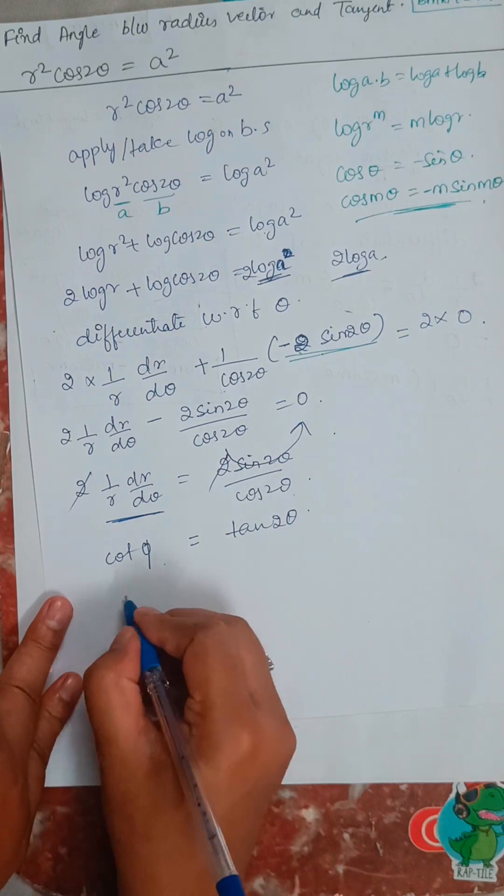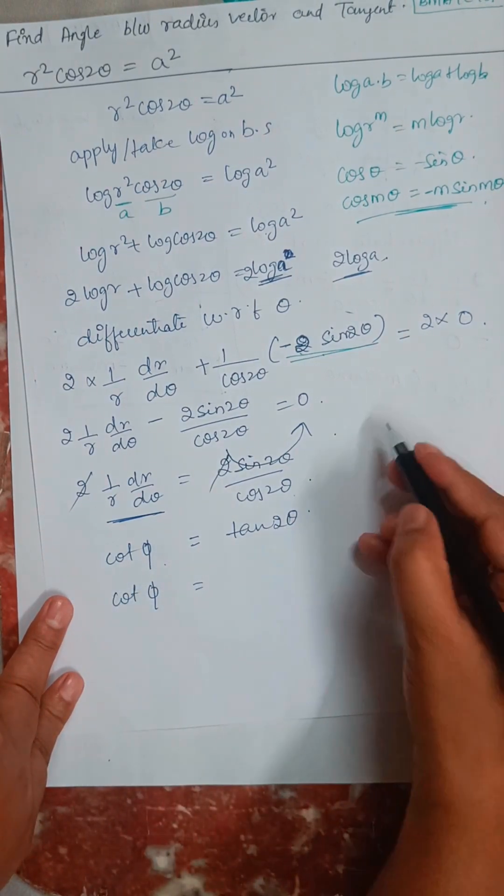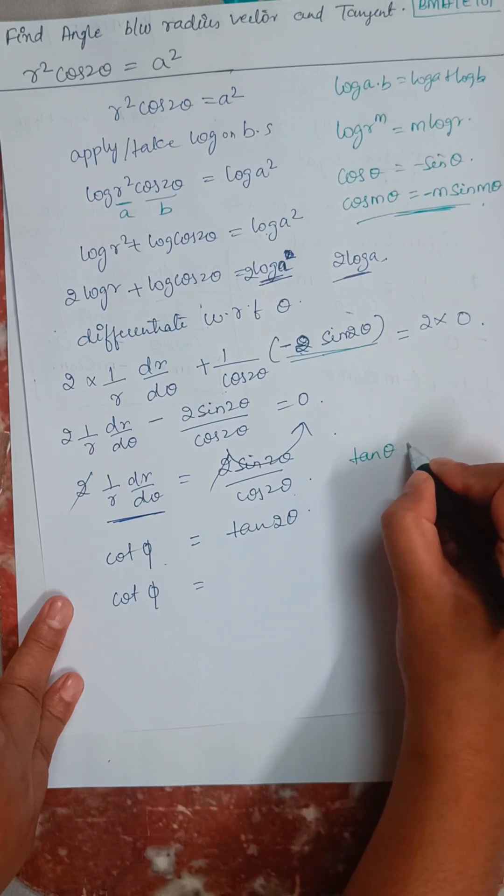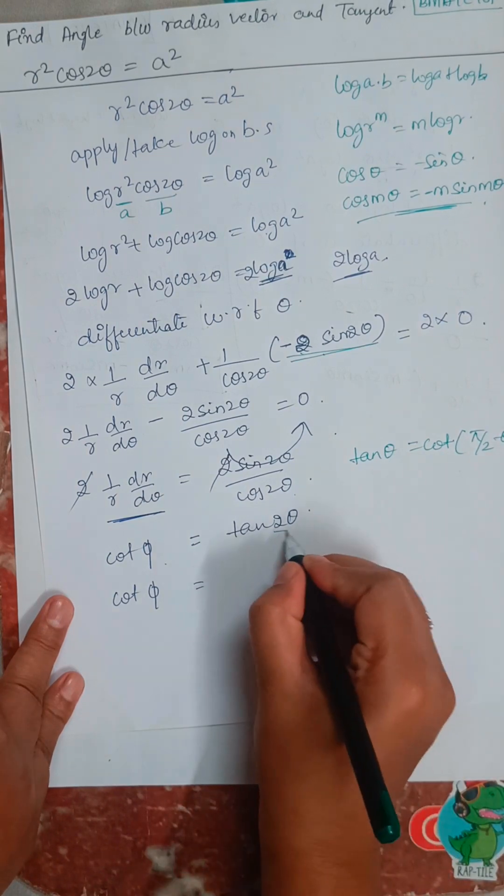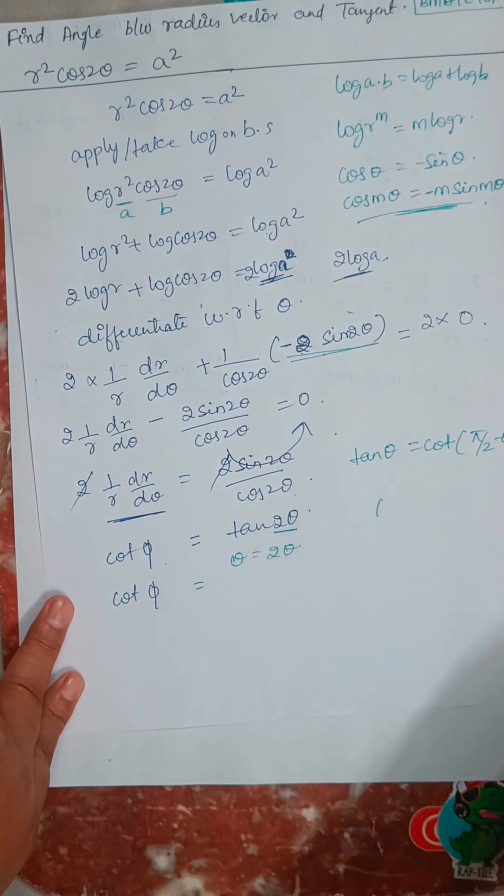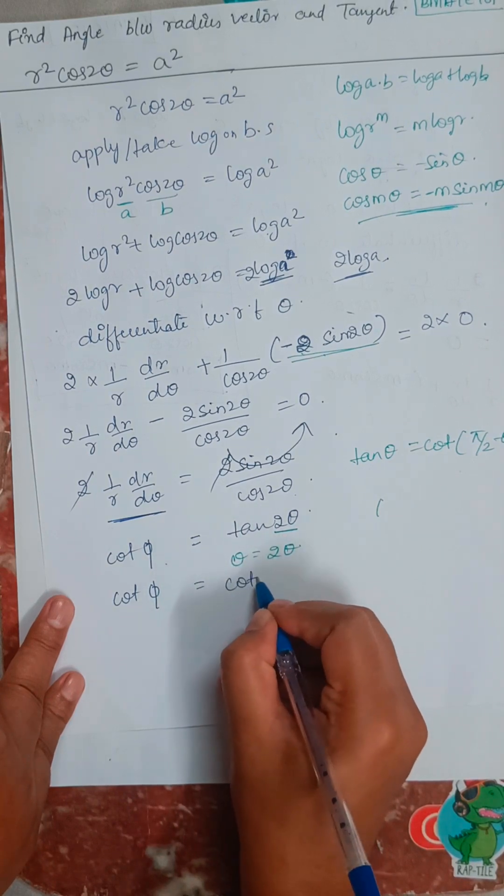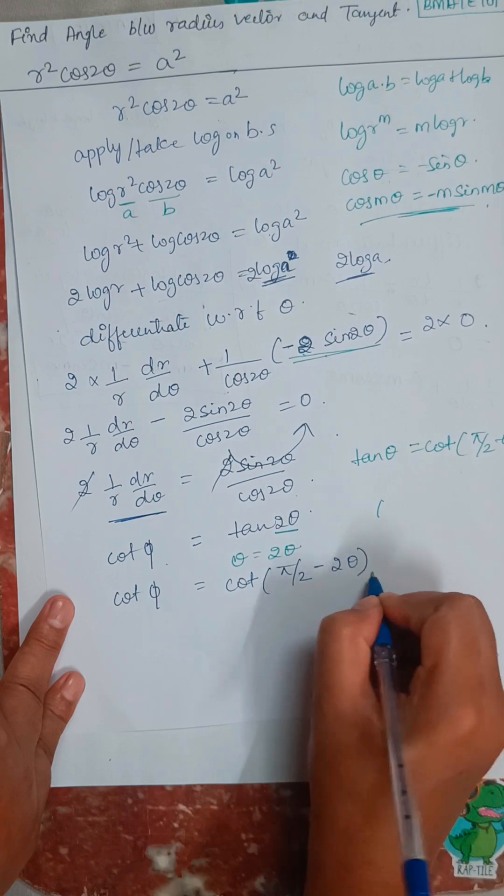After this, tan theta can also be written as cot of pi by 2 minus theta. So here theta is nothing but 2 theta. So what I will do? Cot of pi by 2 minus 2 theta.